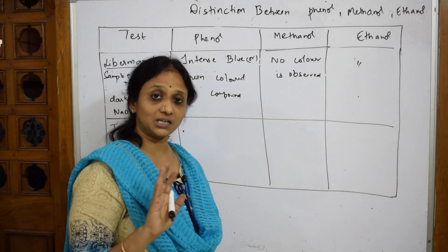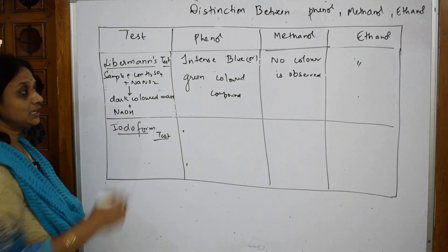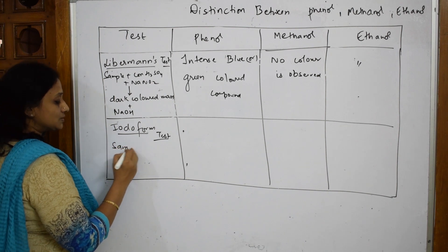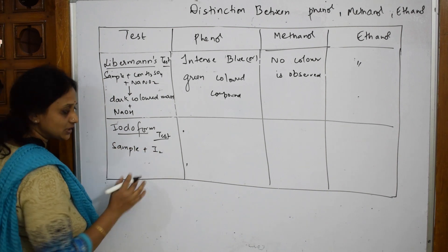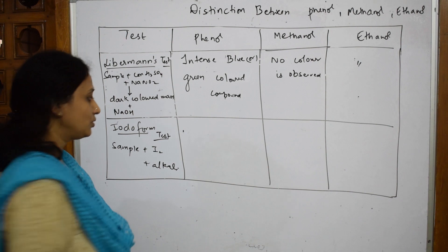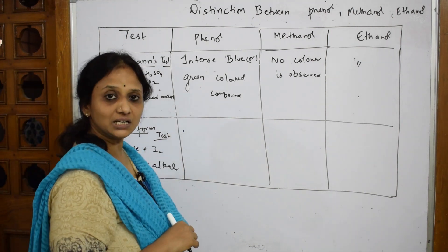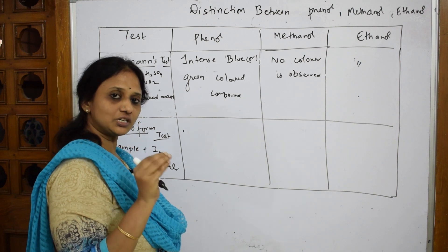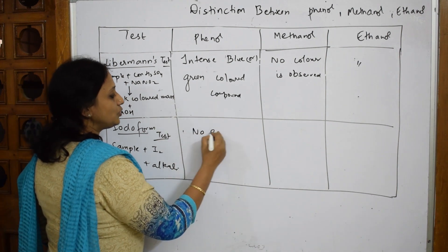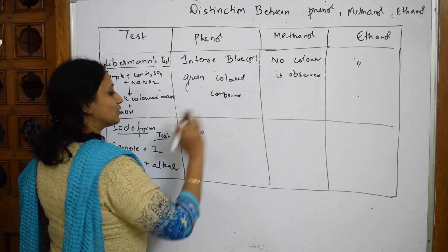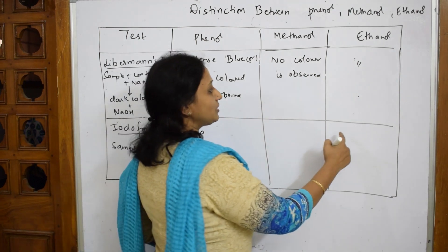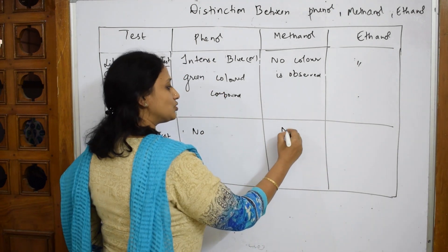Now for the iodoform test — where we test for compounds having a methyl ketone group. Take the sample and add iodine solution along with an alkali. For phenol, it does not show a response because it should have a methyl ketone or a methyl group adjacent to the oxygen. So for phenol, no precipitate is observed. For methanol also, no precipitate is observed.